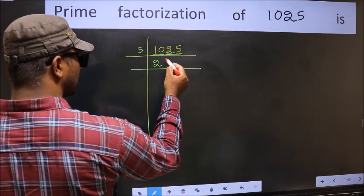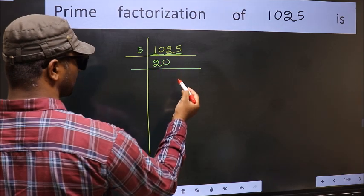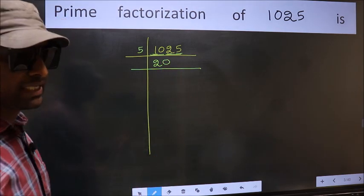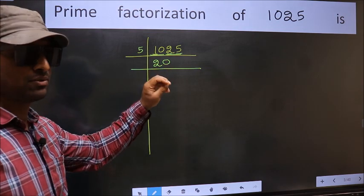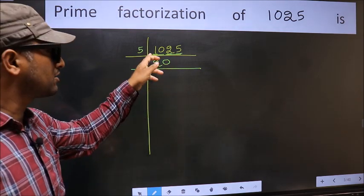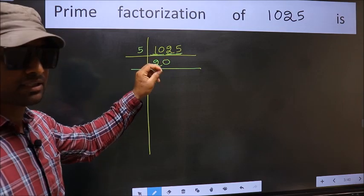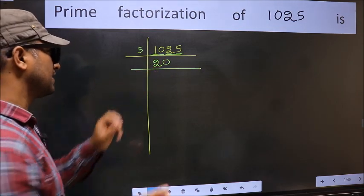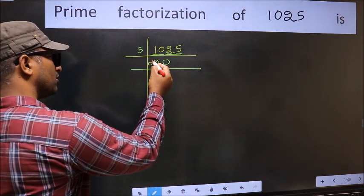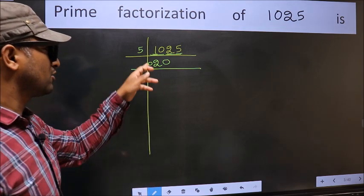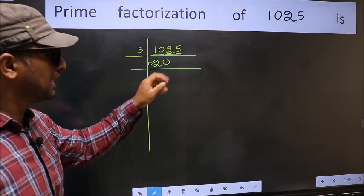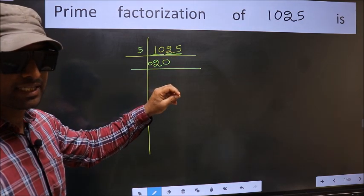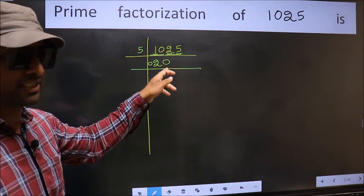Remember, whenever you are taking 2 numbers, compulsory put 0. I repeat, whenever you are taking 2 numbers, compulsory put 0. At the start we had taken 2 numbers, but 0 at the start is of no importance, so I did not write 0 at the start. But in between, if you are taking 2 numbers, then compulsory put 0.